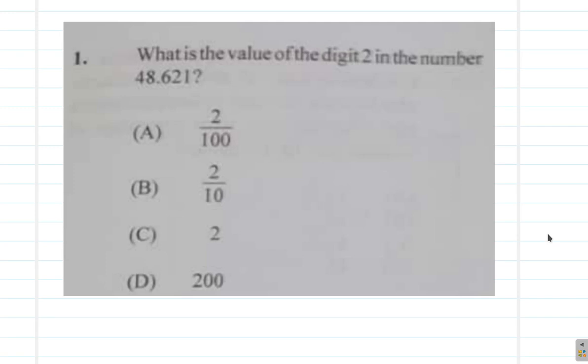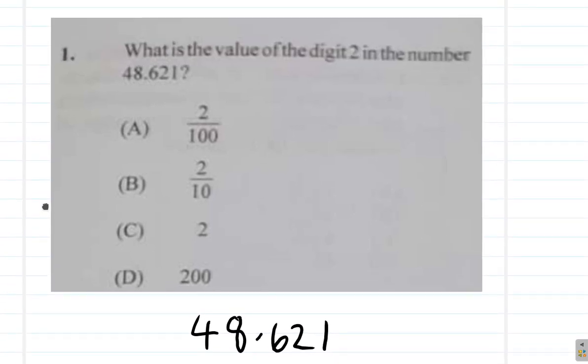January 2021, paper 1, Question 1. What is the value of digit 2 in the number 48.621? The number is 48.621. I'm being asked, what is the value of the digit 2?